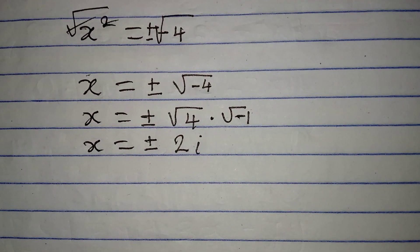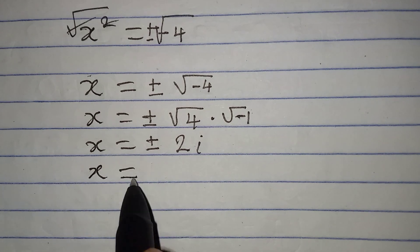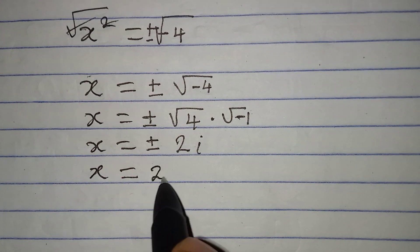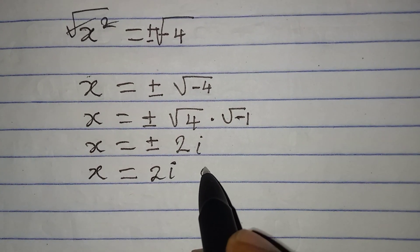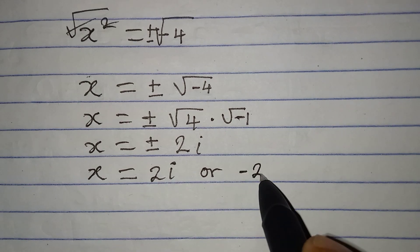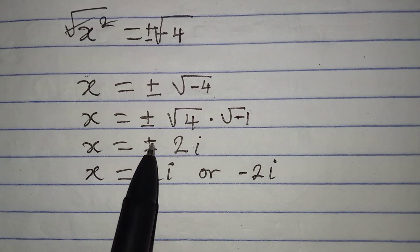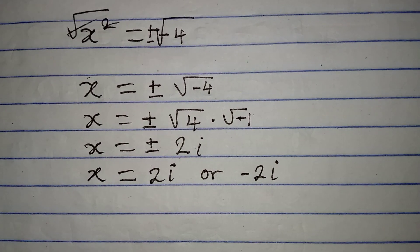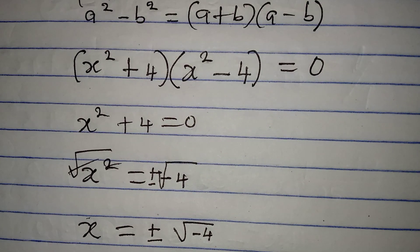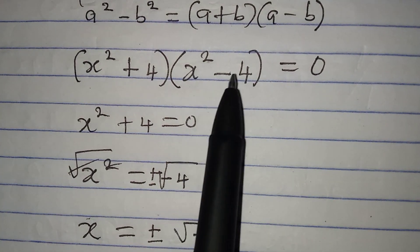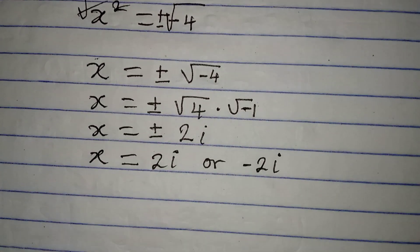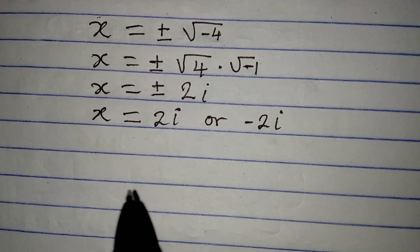So what does this mean? It means that x is equal to 2i or negative 2i because of this plus or minus. Now let's go back to what we have in the second bracket and it is x squared minus 4 which will be equal to 0 if I equate it to 0.